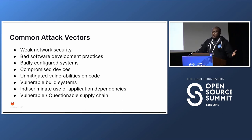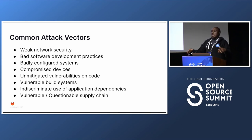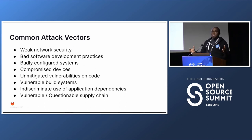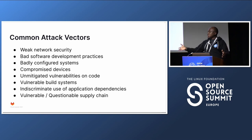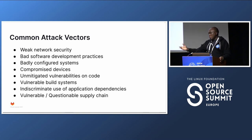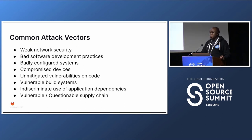Questionable or vulnerable supply chains are a big deal lately. Our industry depends on a lot of services and software — sometimes a chain of tools help you achieve your goals. We all know the SolarWinds issue, which affected a lot of industries, and many more that don't even make the news.